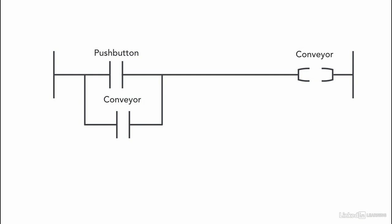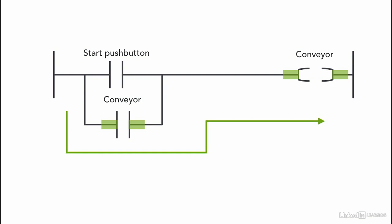The program works this way: at the beginning, nothing is activated. But as soon as the push button is pressed, the instructions are highlighted and the conveyor starts. The memory address of the conveyor within the PLC software equals one. So as soon as the push button is released, the ladder logic will use the CLN instruction to keep the output on and keep the conveyor working.